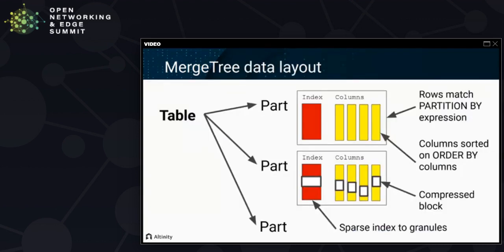Let's look at the structure of the MergeTree table as it's laid out in storage. If you go into the table directory, you'll see it's divided into parts. Each part has a primary key index file, which allows us to locate rows efficiently. For every column you'll see at least two files: one that's basically a list of compressed blocks ordered by row number, and the other is the compressed blocks themselves. The index is sparse — by default it only includes an entry for about every 8,000 rows — which ensures the index can fit easily into memory even for very large tables. That gap between index entries is called a granule.